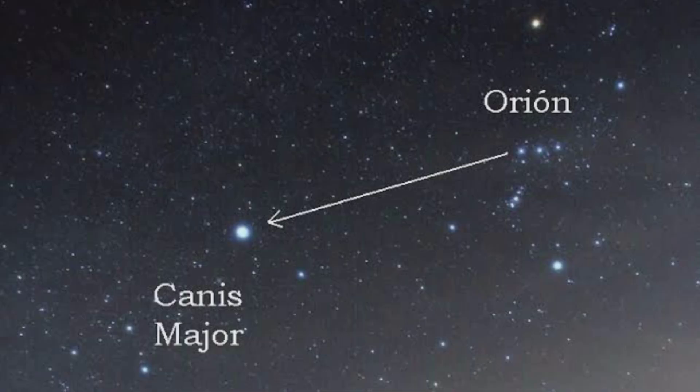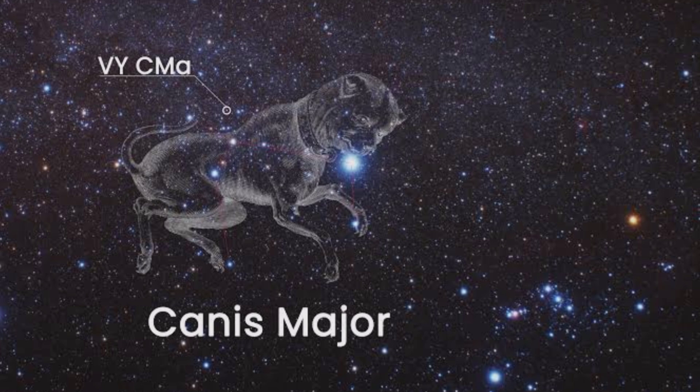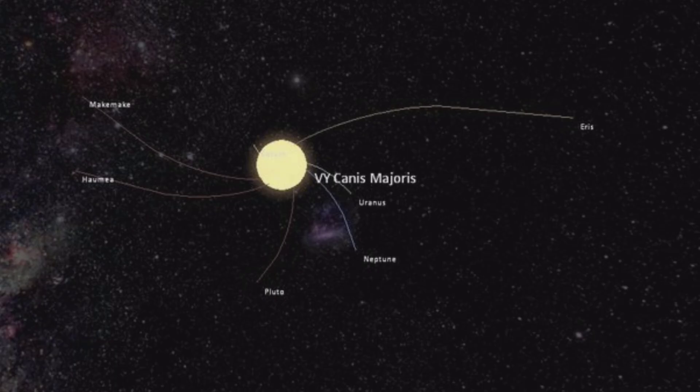So the next time you look up at the starry sky, remember the red giant Canis Majoris, a silent titan whispering tales of the vastness of the universe and the eternal cycle of life, death, and rebirth.